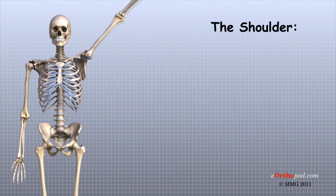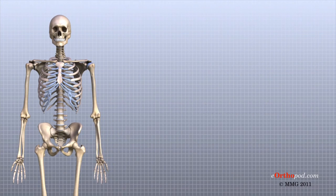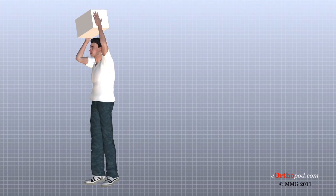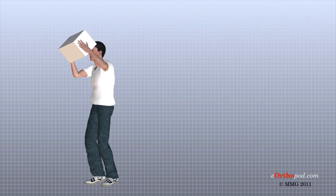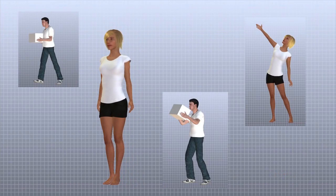As you can see, the shoulder is extremely complex with a design that provides maximum mobility and range of motion. Besides big lifting jobs, the shoulder joint is also responsible for getting the hand in the right position for any function. When you realize all the different ways and positions we use our hands every day, it is easy to understand how hard daily life can be when the shoulder isn't working well.